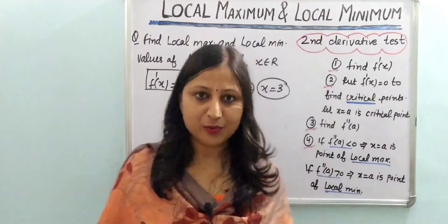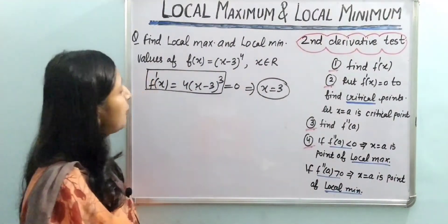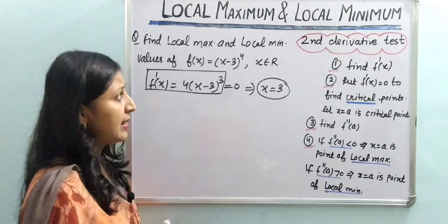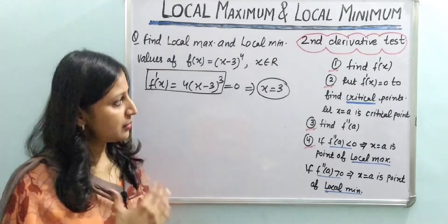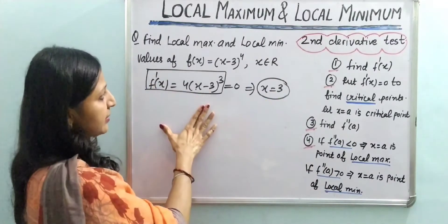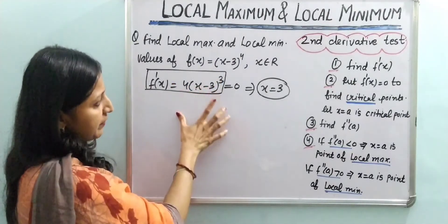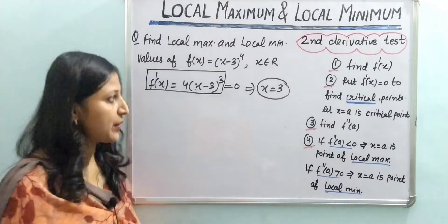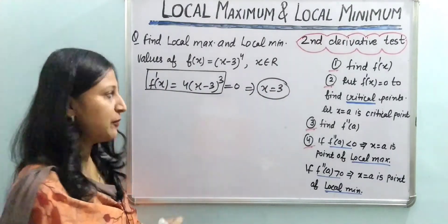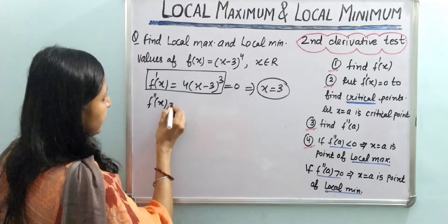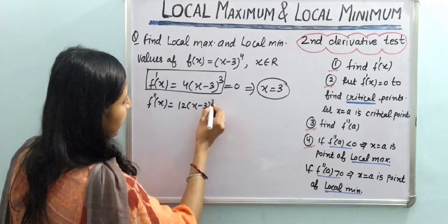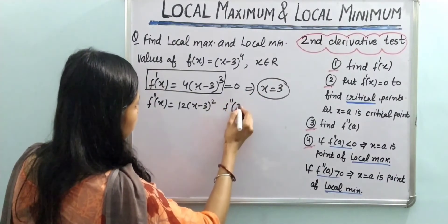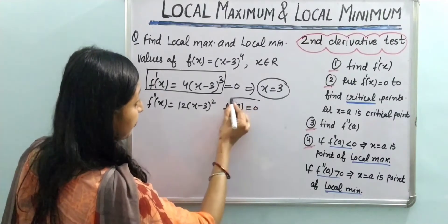Let us move to the next question. Find local maximum and local minimum values of f(x) = (x-3)⁴, where x belongs to the set of all real numbers. First, f'(x) = 4(x-3)³. Setting it to zero gives only one critical point: x = 3. Now finding the second derivative: f''(x) = 12(x-3)². Evaluating at the critical point: f''(3) = 0.